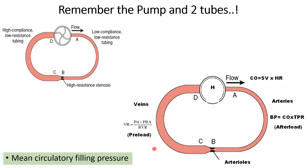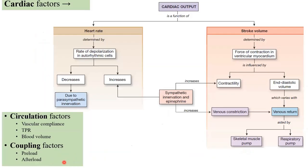Two filling pressures: mean circulatory filling pressure (MCFP) refers to the entire circulation including the pulmonary circulation, while mean systemic filling pressure refers only to the systemic circulation. This is an important distinction to remember.